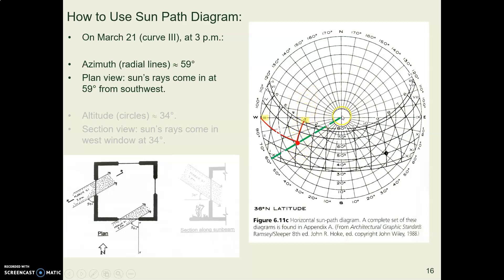And what azimuth line do they come closest to? What straight line coming out from the center are they closest to? They are close to the 60-degree line, just a little bit to the right of it, but not much. So let's say our azimuth, our direction away from true south, is about 59 degrees in the afternoon in March. So in your plan view of your house, you could draw lines of sunbeams coming through your window at 59 degrees.